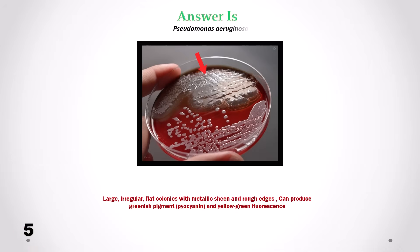Can you identify this bacteria? Correct answer is Pseudomonas aeruginosa. We can see large irregular flat colonies with metallic sheen and rough edges. Pseudomonas bacteria can produce greenish pigment pyocyanin and yellow-green fluorescence.